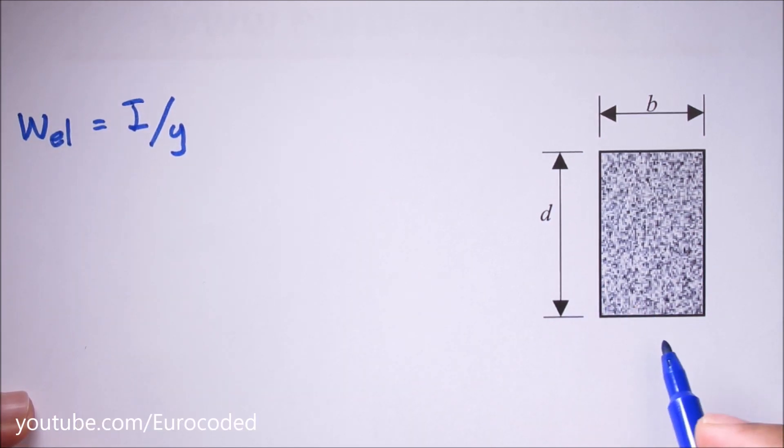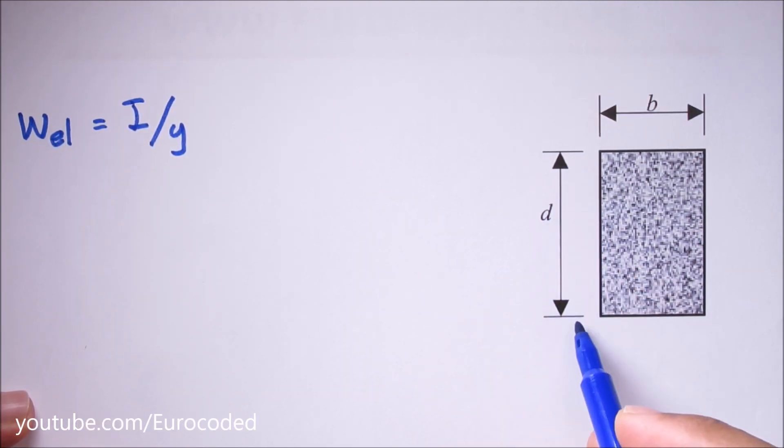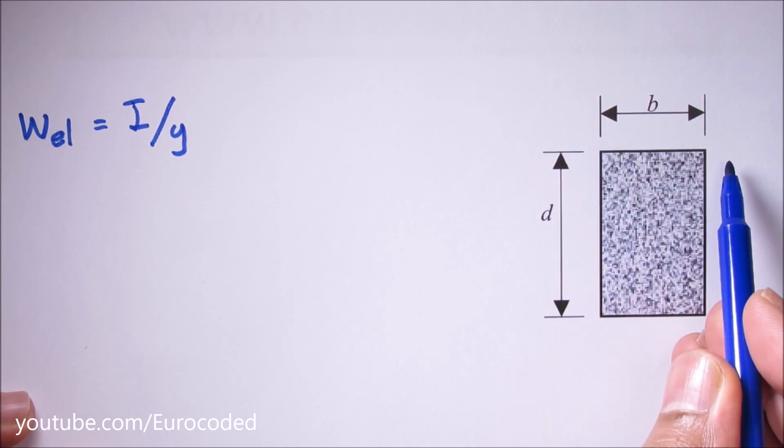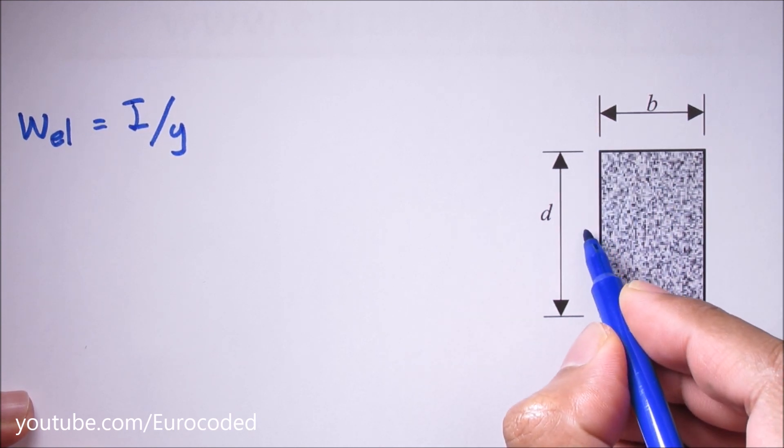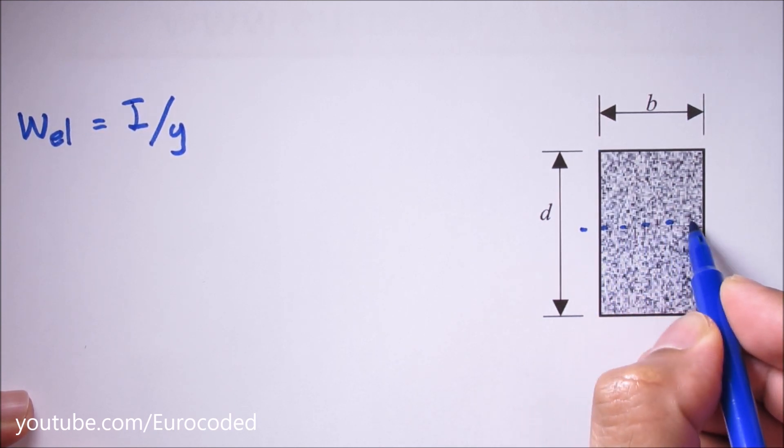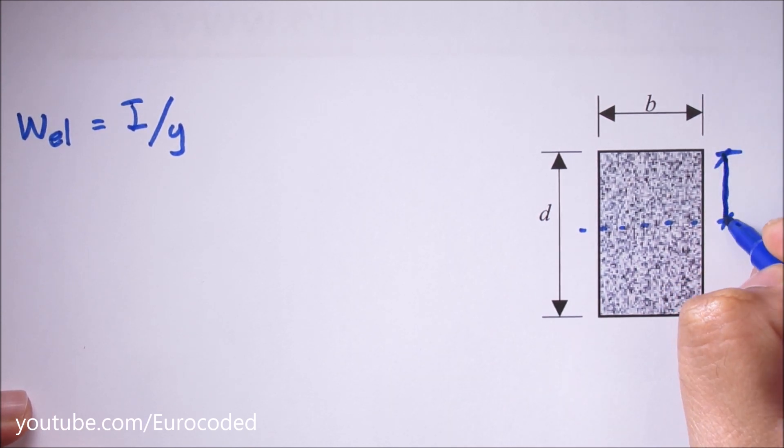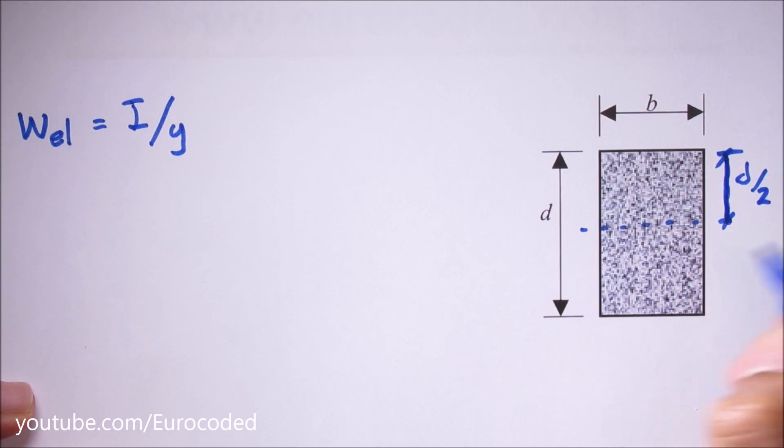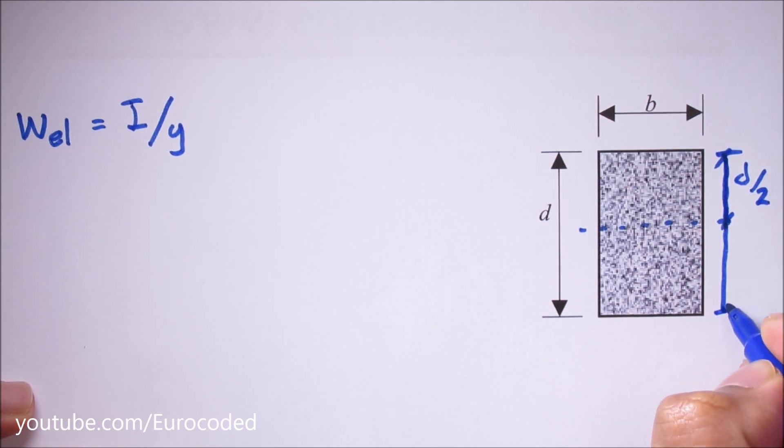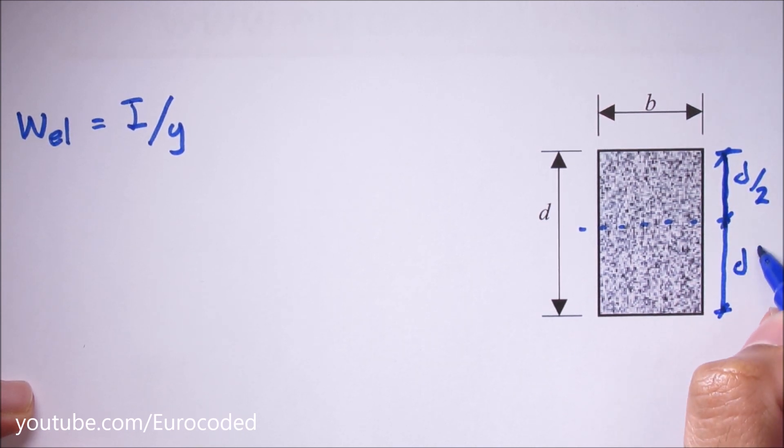Let's look at this example where the depth of the section is d and the width of the section is b. Obviously we know the neutral axis is somewhere here, and this would be d over 2 and this would be d over 2.